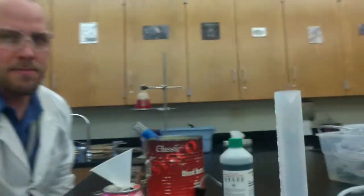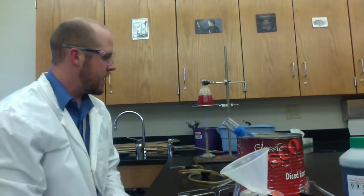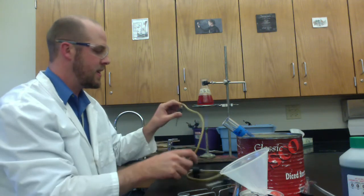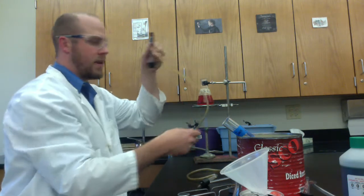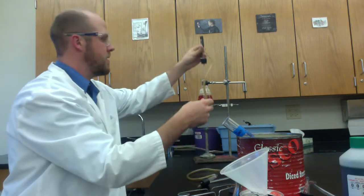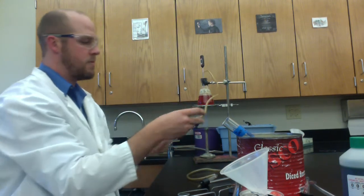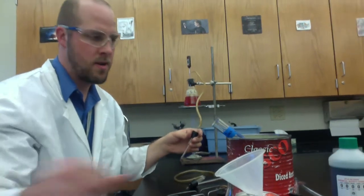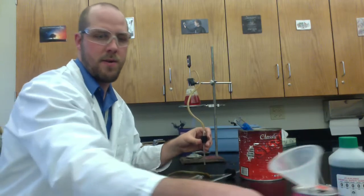So I just lit my Bunsen burner over here. You want to get your flame so that it's maybe kind of close to that Erlenmeyer flask. You don't want it actually enveloping and going around the Erlenmeyer flask. So while that's working, I'm going to hook up my thermometer and my tubing here.